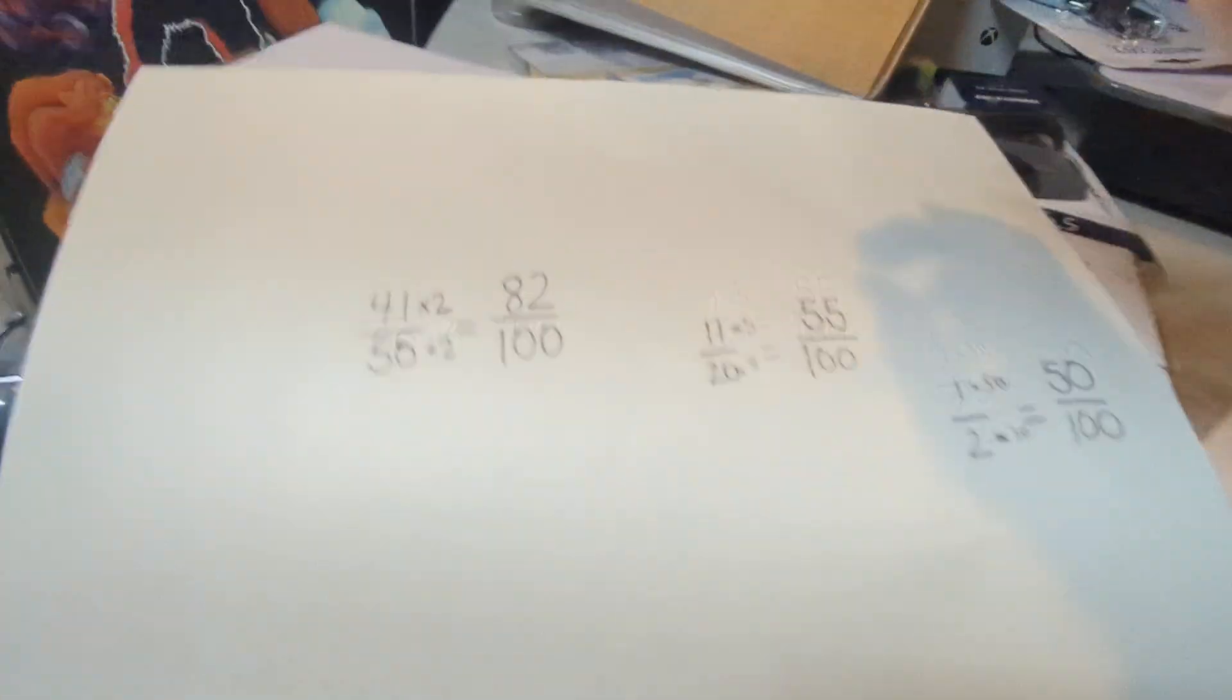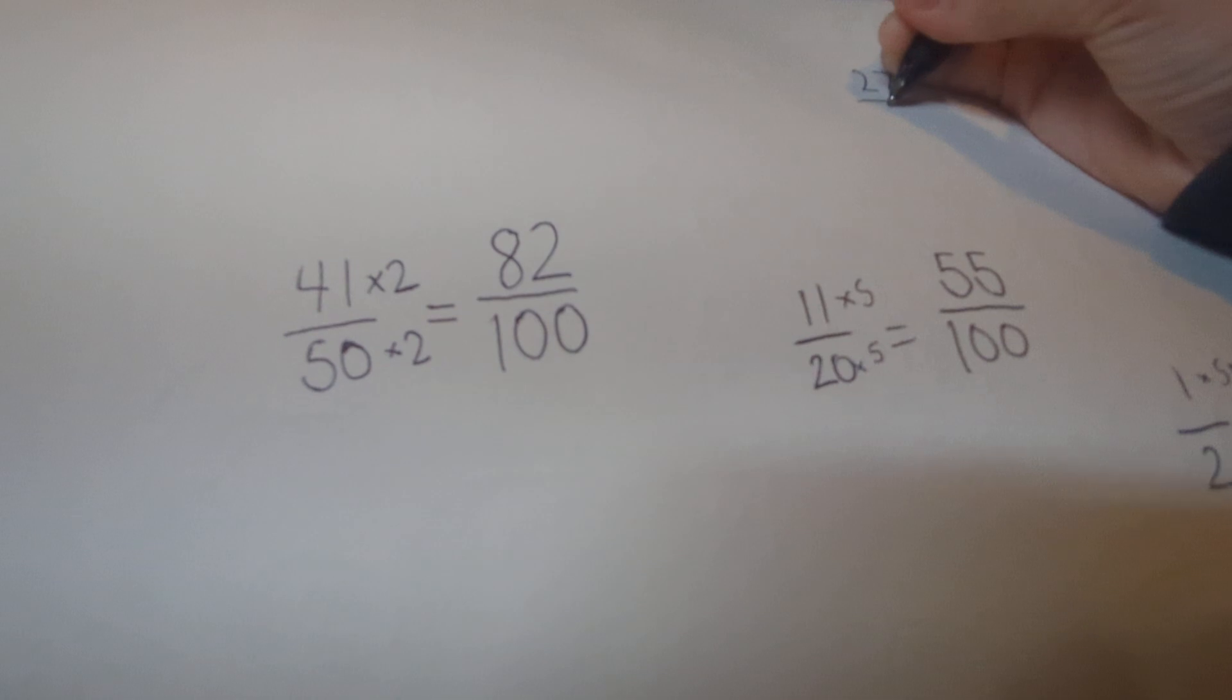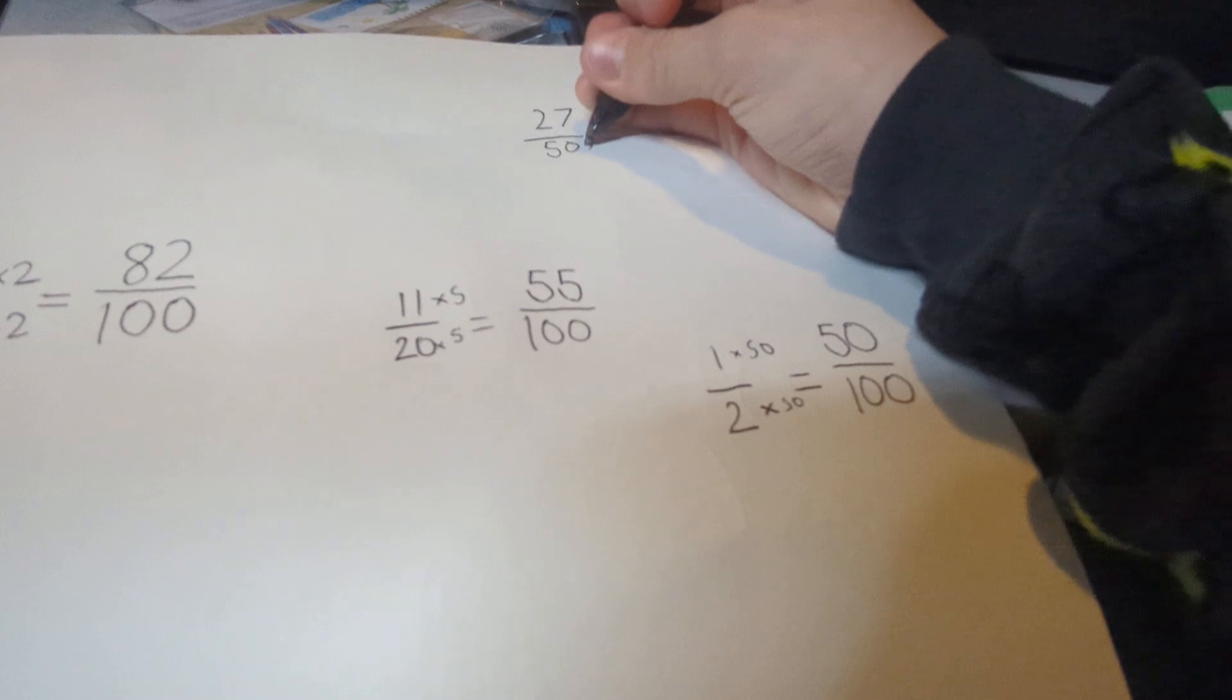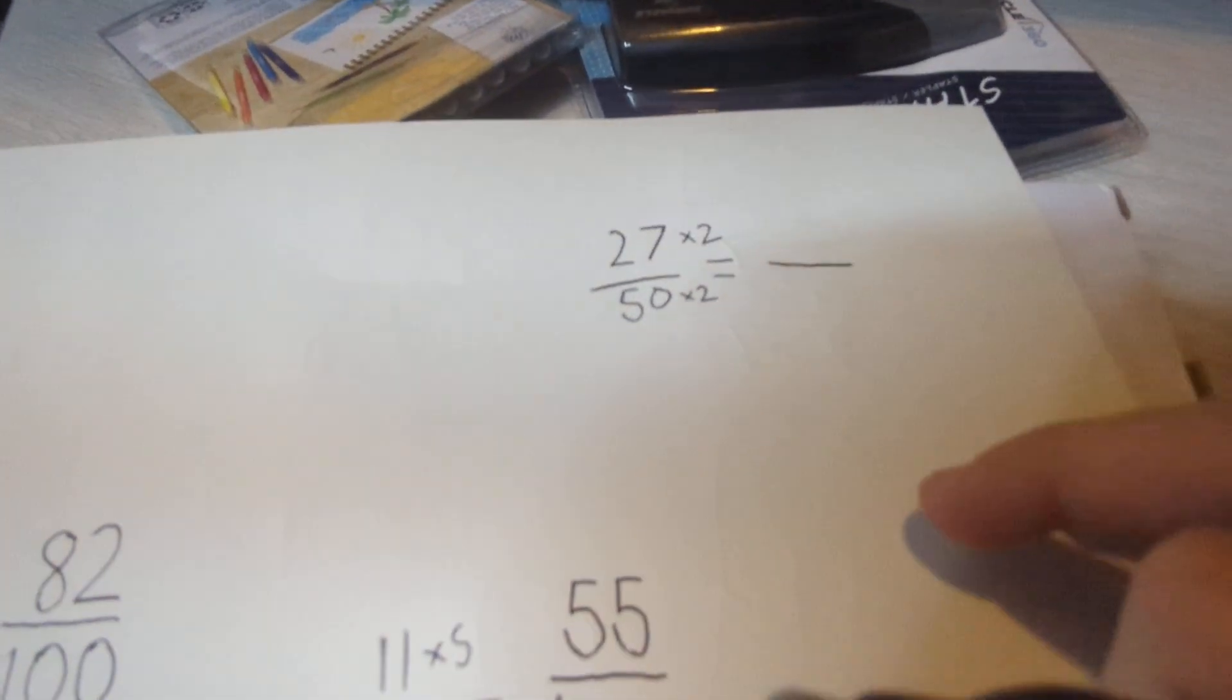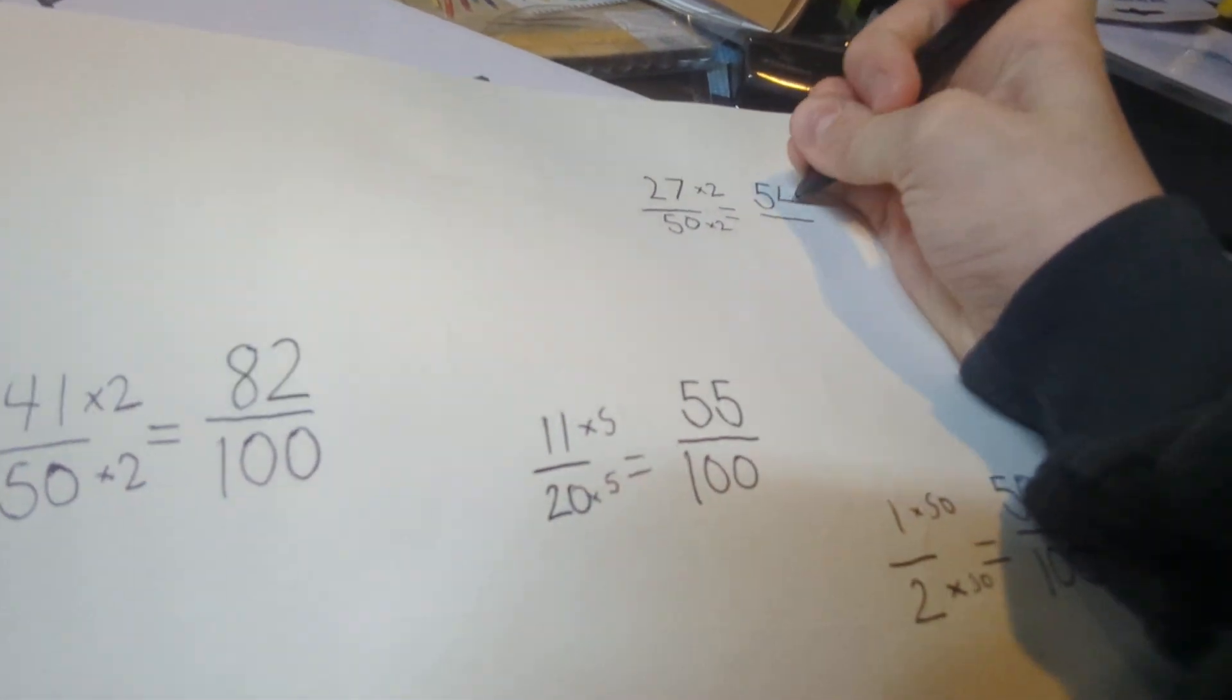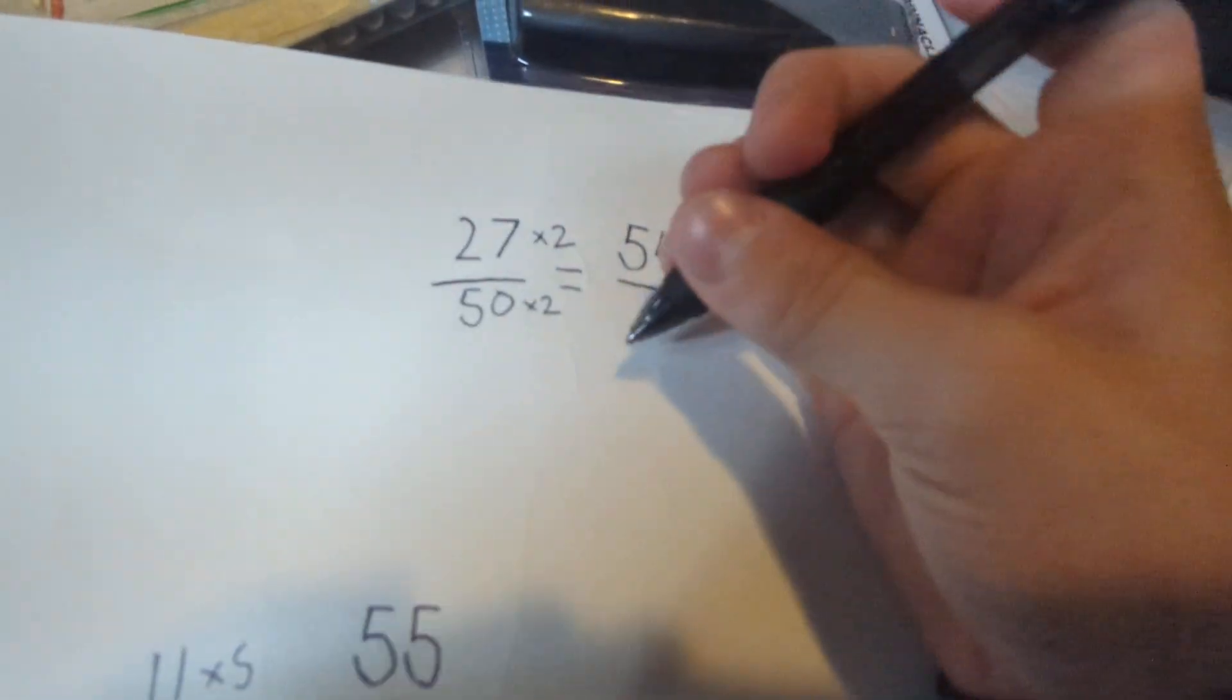Now let's try this one for 27/50. Multiply it by 2. 27 times 2 is 54. 50 times 2 is 100.